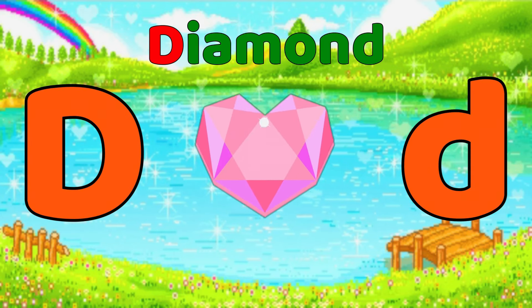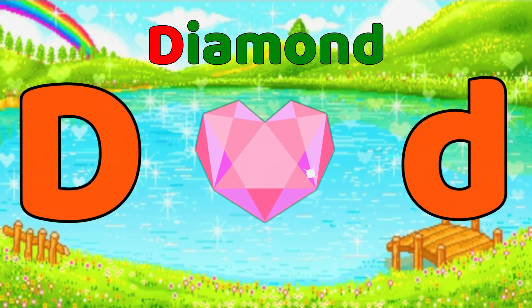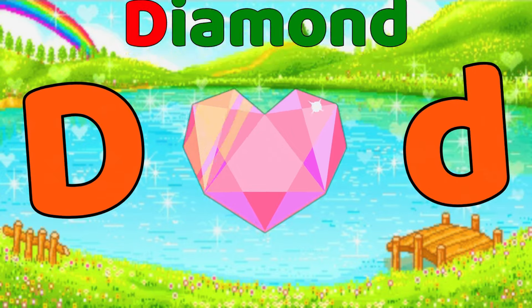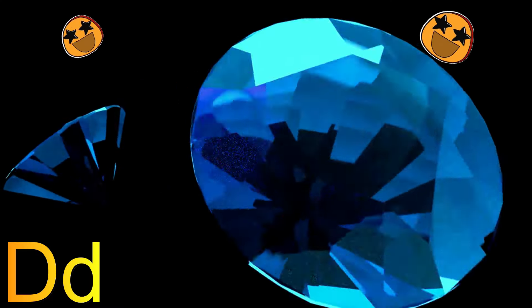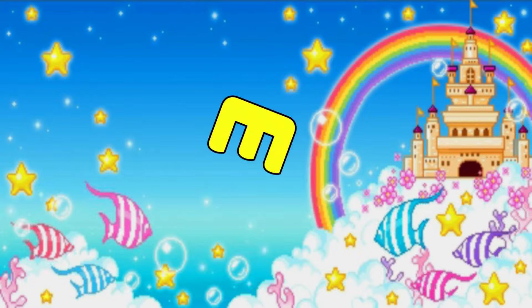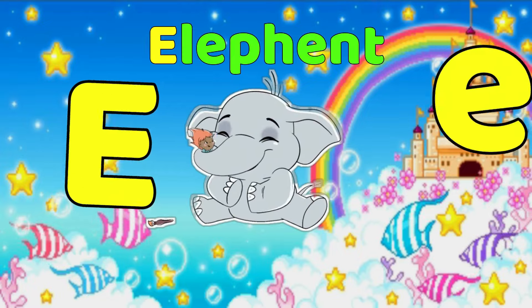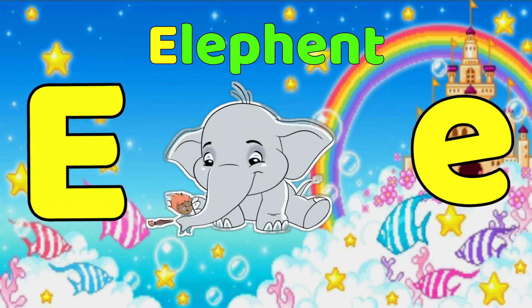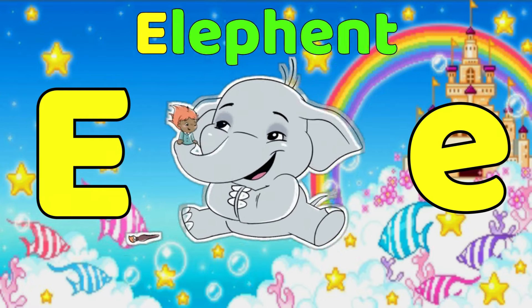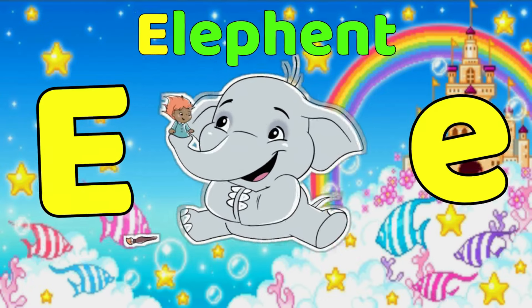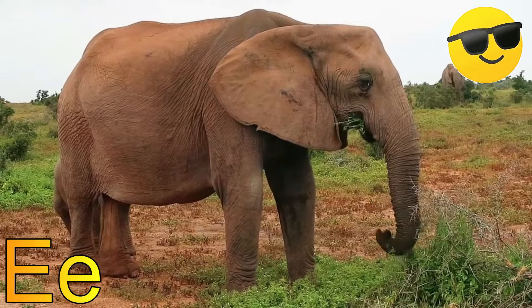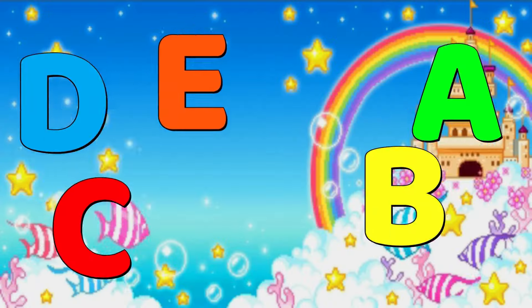D is for Diamond, D-D-Diamond, D-Diamond. E is for Elephant, E-E-Elephant, E-Elephant.